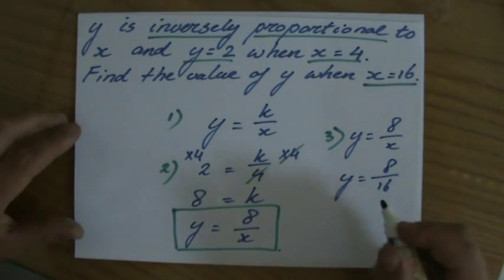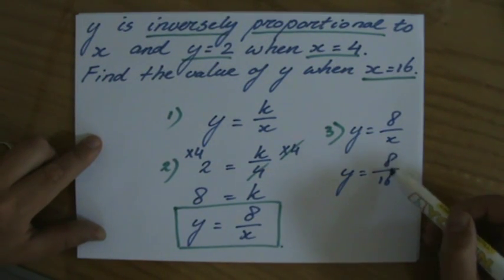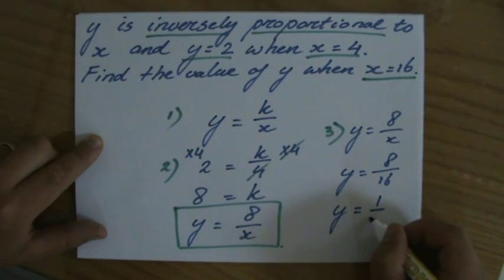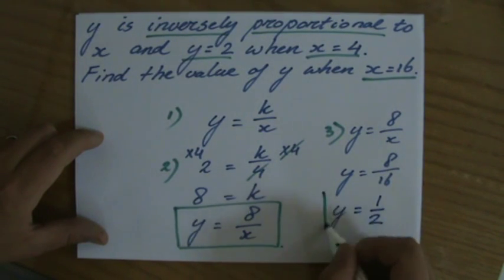Now your calculator can simplify that for you, you have fractions you always have to simplify, but I hope you see that the common factor is 8, so y equals 1 over 2. And y equals 1 over 2 when x equals 16.